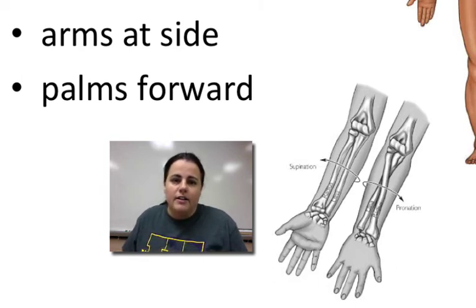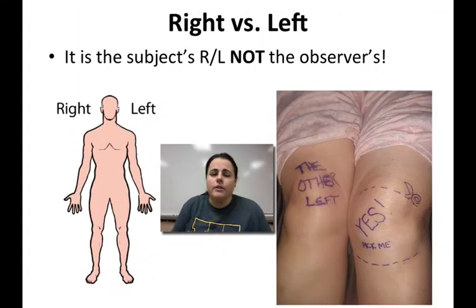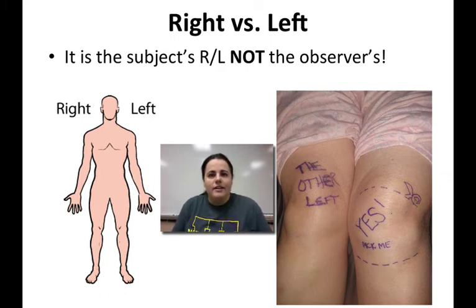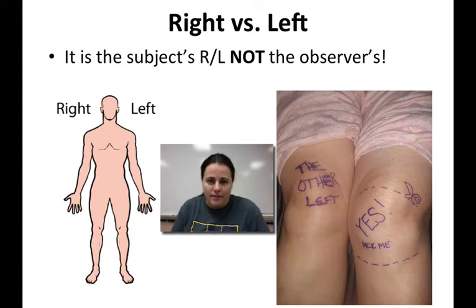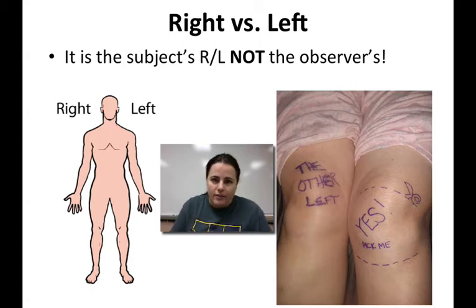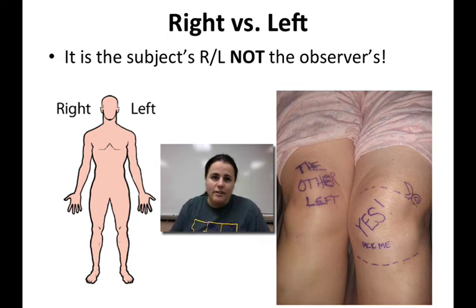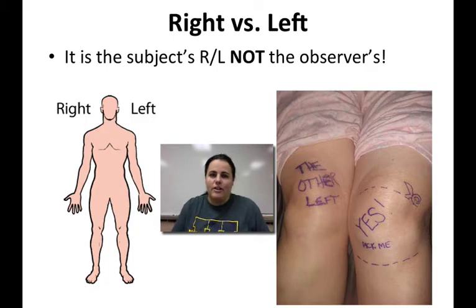Another thing we have to learn is left side versus right side. In anatomy and the medical field, it's very important to know that you are always referencing your subject or patient's left or right — not the observer's left or right. The right side of that subject is on your left side, so you always have to switch that in your mind, or else malpractice suits happen and a doctor may do surgery on the wrong knee or take out the wrong kidney.